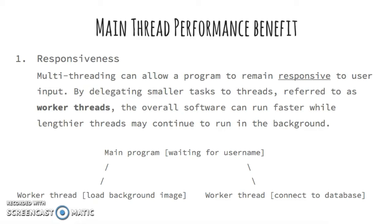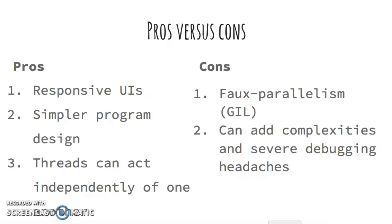In this example on the screen, a worker thread is spawned to load the background image while another worker thread works to connect to a database. Like anything else, multi-threading has its pros and its cons. As discussed, multi-threading allows for more responsive interfaces. It also has the ability to lead to simpler program design by separating tasks into independent thread bodies. As such, tasks can succeed or fail independently without negatively affecting the program as a whole.